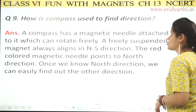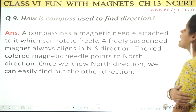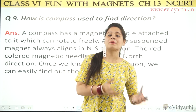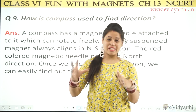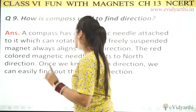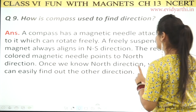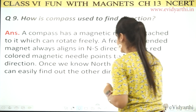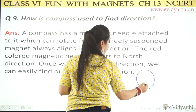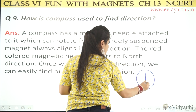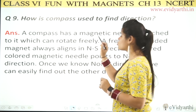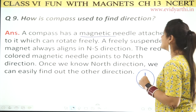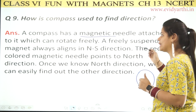Let's get to the next question. Question 9 asks: how is a compass used to find direction? A compass has a magnetic needle attached to it which can rotate freely. That needle is magnetic.